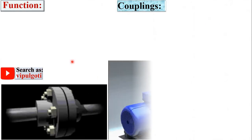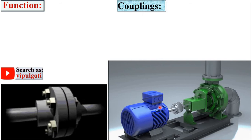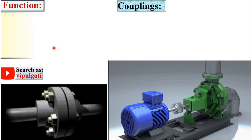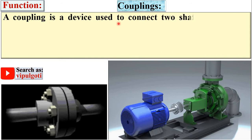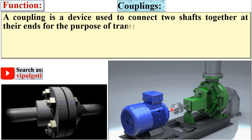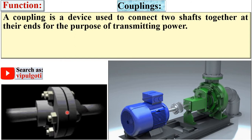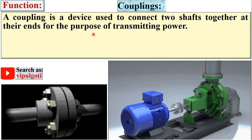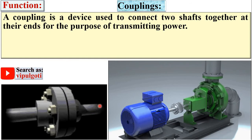Now let's start with the function of coupling. A coupling is a device used to connect two shafts together at their ends for the purpose of transmitting power. Here you can see the power is transmitted from one shaft to the another shaft.